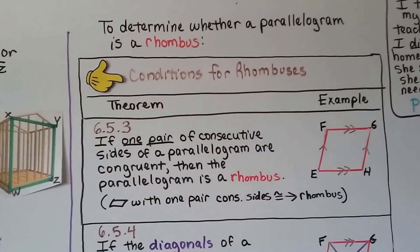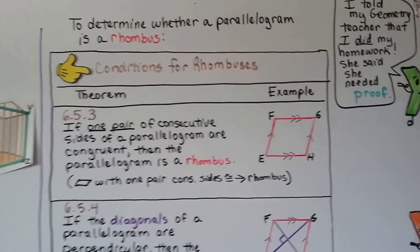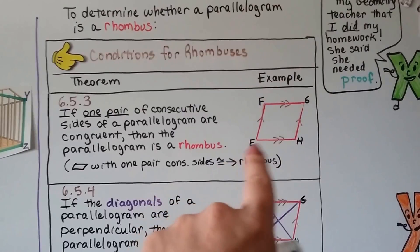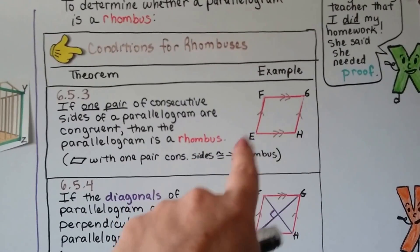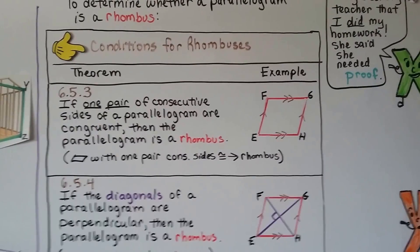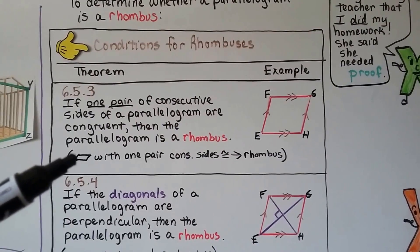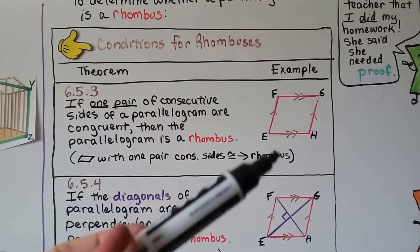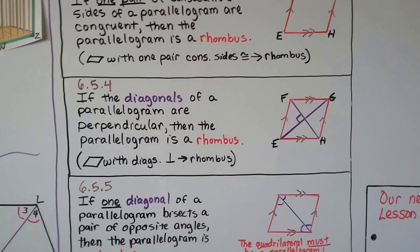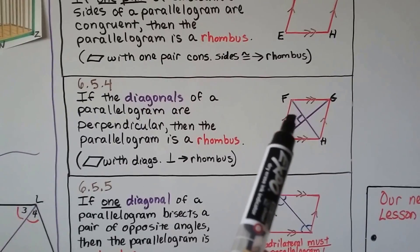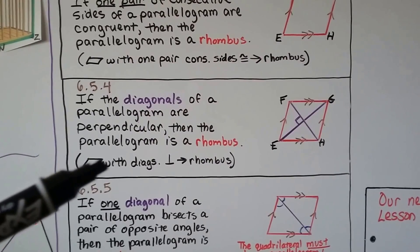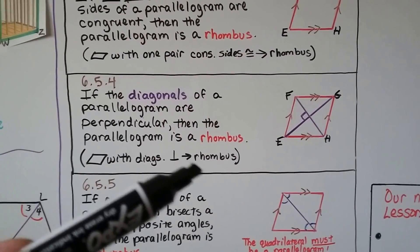To determine whether a parallelogram is a rhombus, here are the conditions for rhombuses. Theorem 6.5.3 says if one pair of consecutive sides — like EF and EH — are congruent, then the parallelogram is a rhombus. Geometric notation: parallelogram with one pair of consecutive sides congruent, therefore rhombus. Theorem 6.5.4 says if the diagonals of a parallelogram are perpendicular, then the parallelogram is a rhombus. Geometric notation: parallelogram with perpendicular diagonals, therefore rhombus.